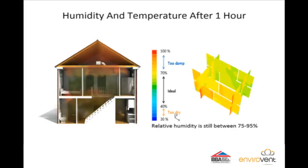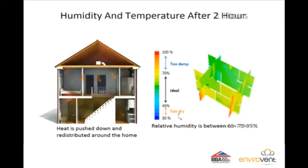Looking at the scale, the CFD model shows that after only one hour the humidity within the dwelling is showing yellow, which means the humidity has fallen to around 80%. After two hours the air has already fallen below 70% and the heat at high level has been totally redistributed around the property, saving energy.